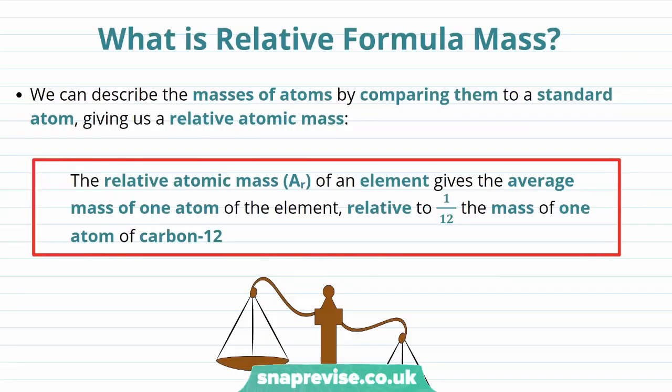So firstly, what is the relative formula mass? Well, if you've seen our video on atomic structure, you will have seen how we can describe the mass of some atomic particles, such as electrons and neutrons, with reference to the mass of a proton. Similarly, we can describe the masses of atoms by comparing them to a standard atom. This gives us what is known as a relative atomic mass.